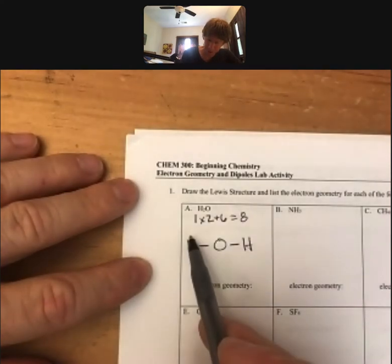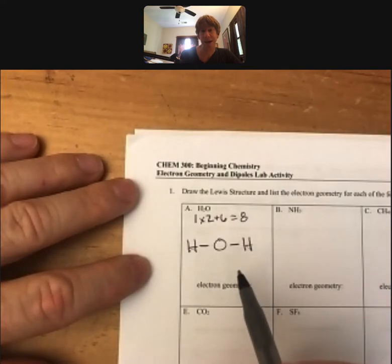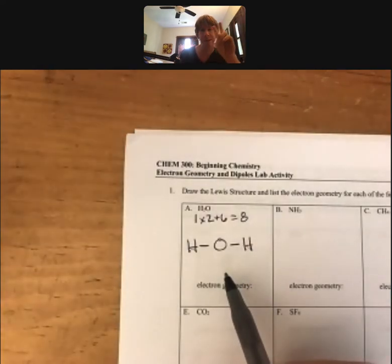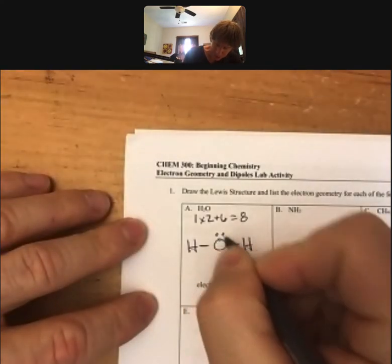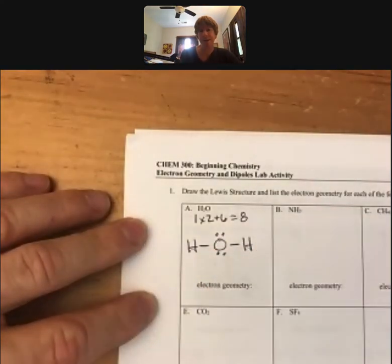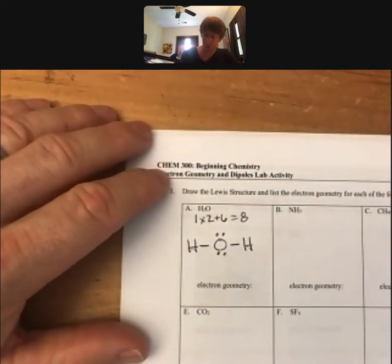Ordinarily it's true we put the extra electrons on the outside atoms, but hydrogen has its share of two electrons which means it doesn't need any more. So when you have extra electrons you put them on the center atom, and that is the completed Lewis structure for H2O.